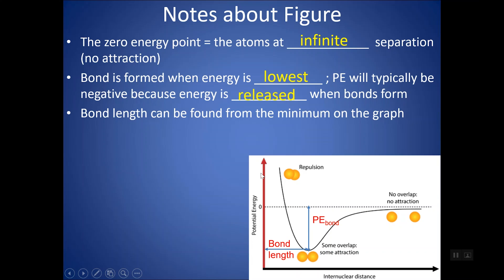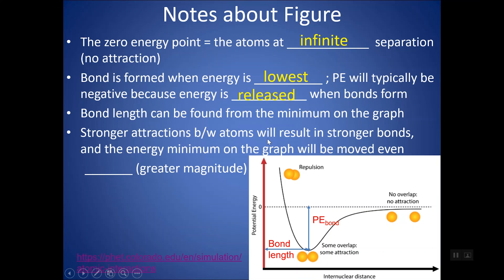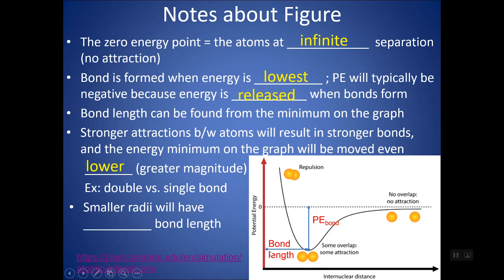Rather than potential energy, they often ask for bond energy — the energy released when the bond is formed. If they ask for the energy needed to break the bond, it's the positive of the minimum value. Stronger interactions result in stronger bonds, meaning a lower minimum energy; the stronger bond would have a lower minimum and require more energy to break. Smaller radii give shorter bond lengths, shifting the minimum closer to the y-axis, and also result in stronger bonds.